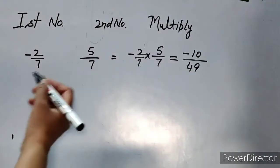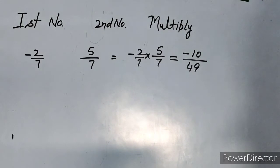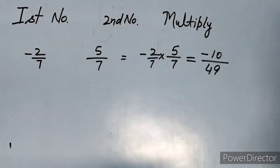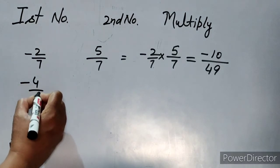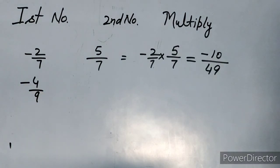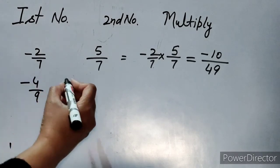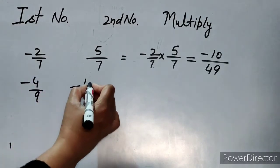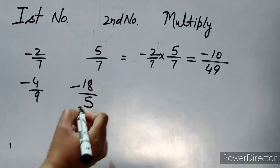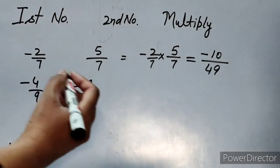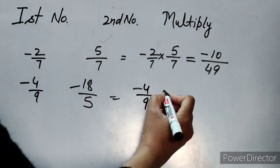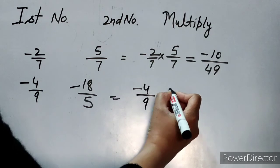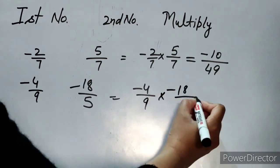Let's take one more example. The first rational number is minus 4 over 9 and the second rational number is minus 18 over 5. We multiply minus 4 over 9 by minus 18 over 5.